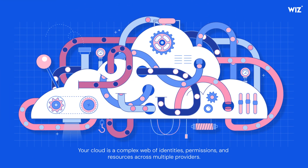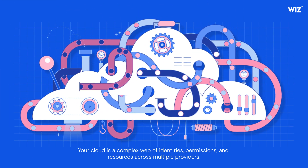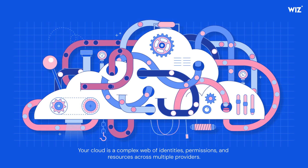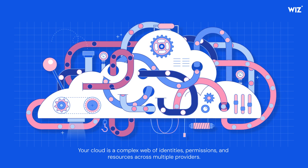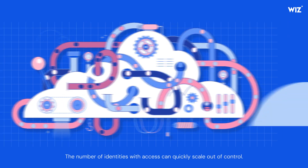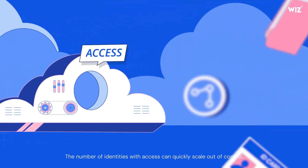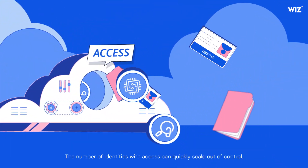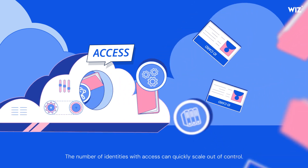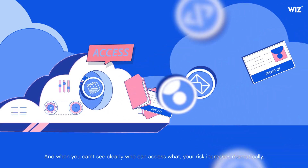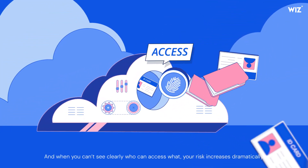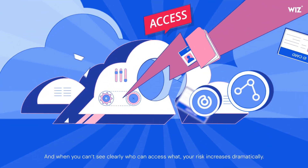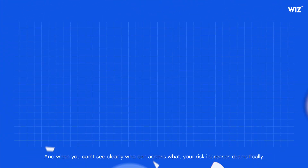Your cloud is a complex web of identities, permissions, and resources across multiple providers. The number of identities with access can quickly scale out of control. And when you can't see clearly who can access what, your risk increases dramatically.